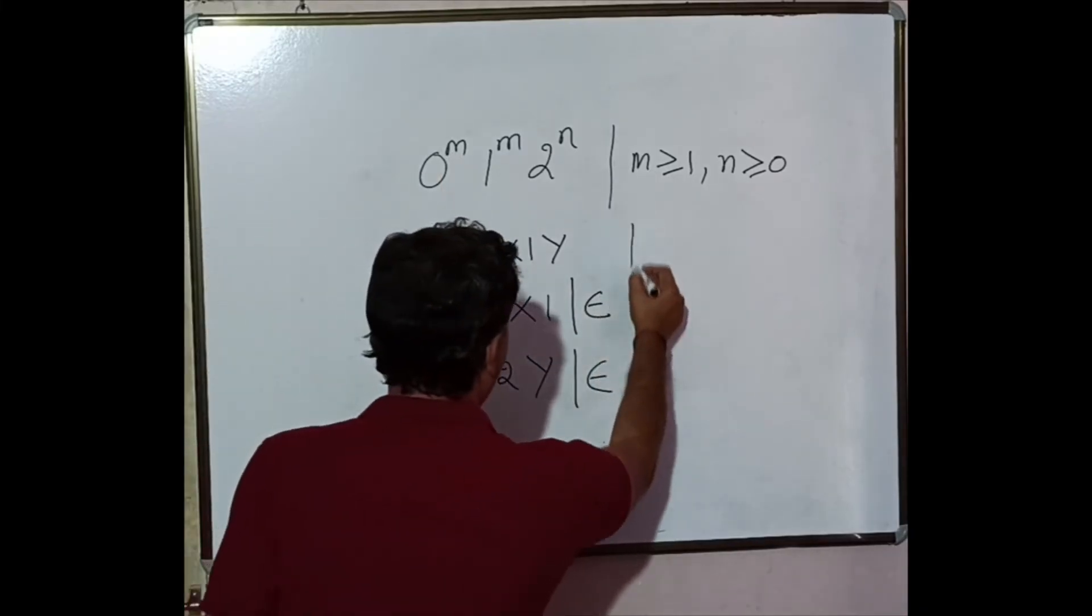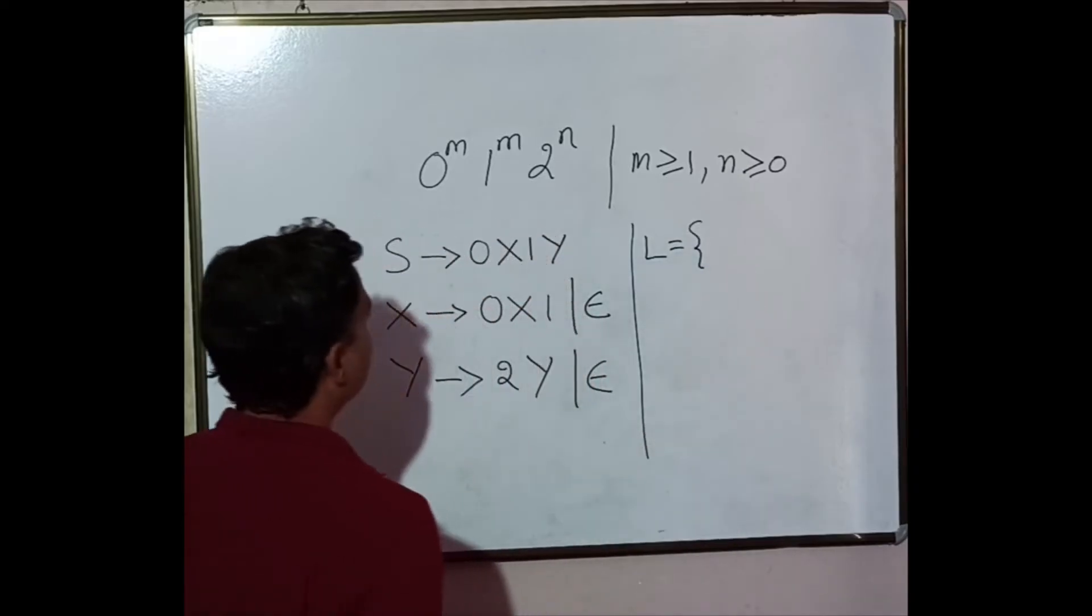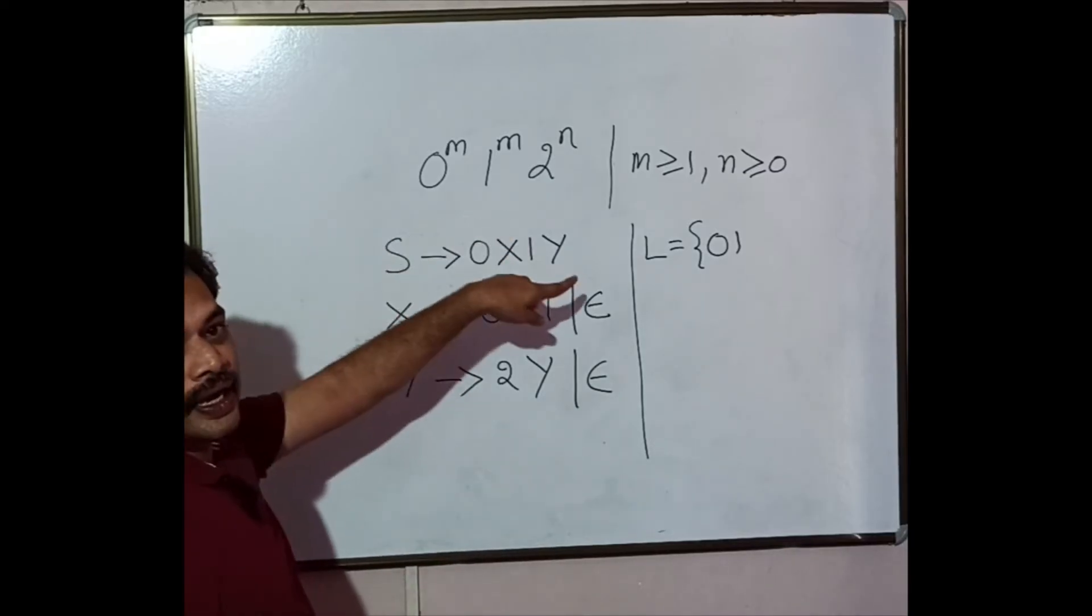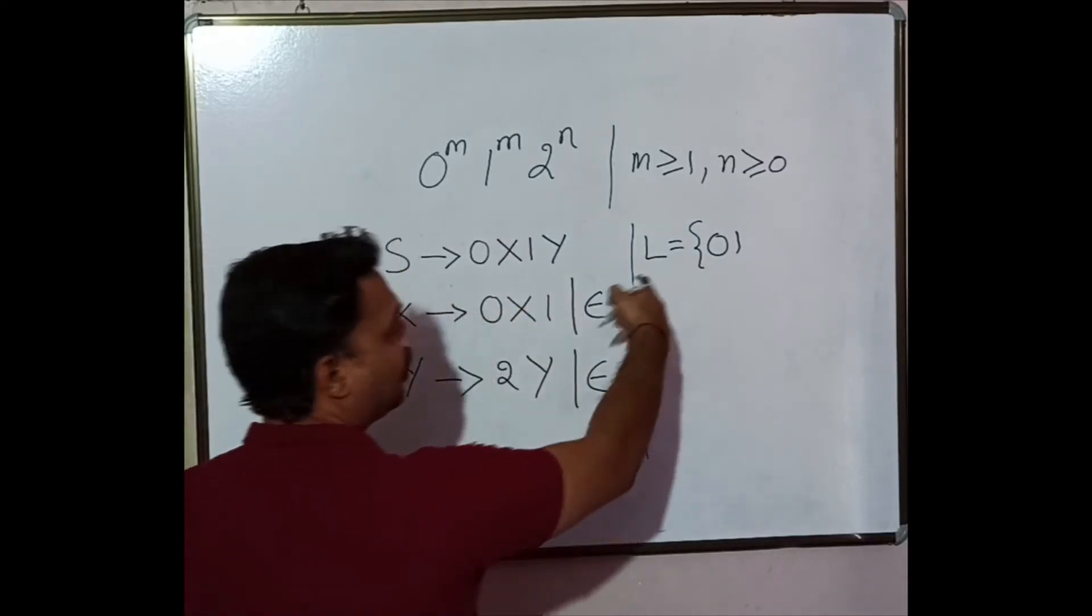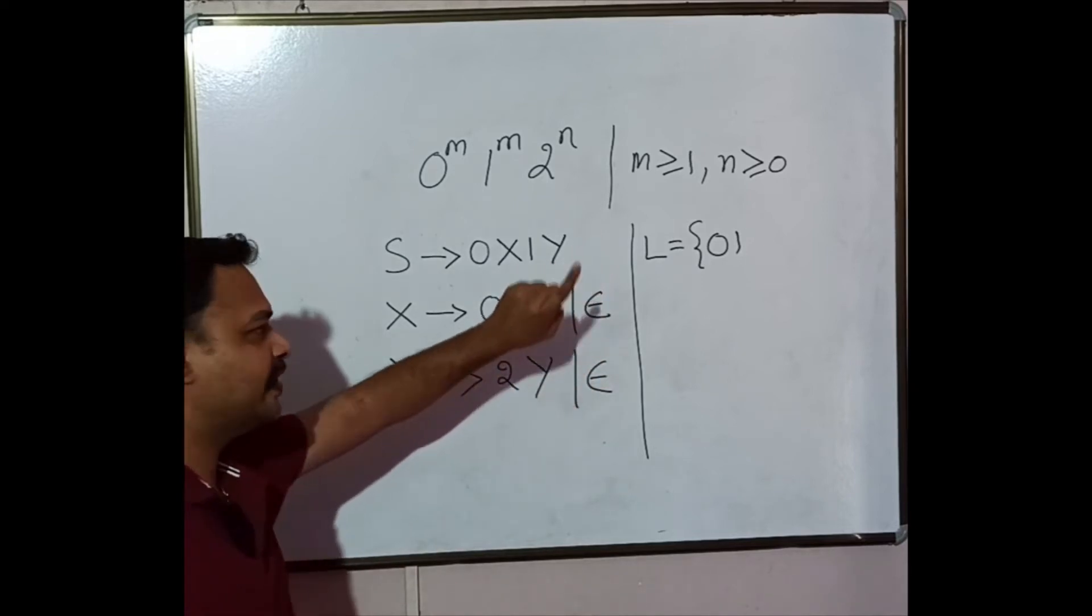Now let us cross verify. Now let us first have the language set. So at least one pair of 0, 1 has to be there. So we cannot have epsilon as a string in this particular language set.